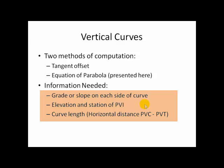You need to know the elevation and the station of the PVI, that is the point of vertical intersection. You also need to know the curve length, that is the horizontal distance from the PVC to the PVT. The PVC is the point of vertical curvature, and the PVT is the point of vertical tangency.